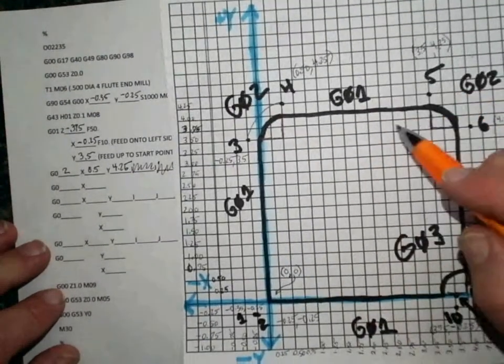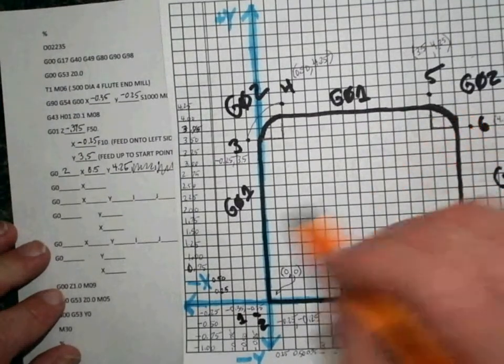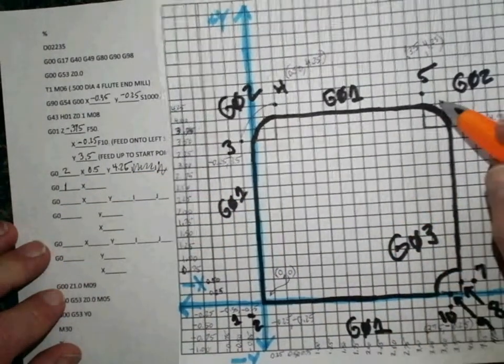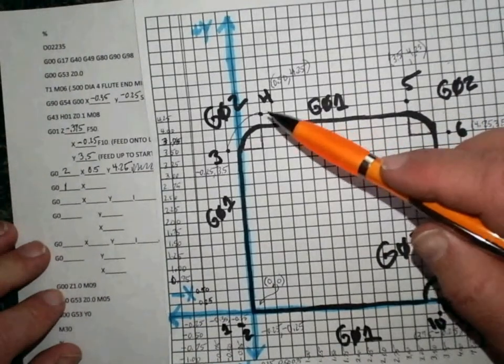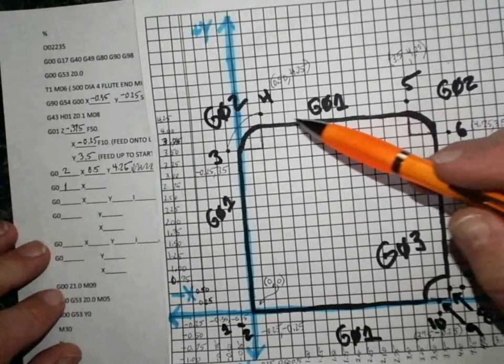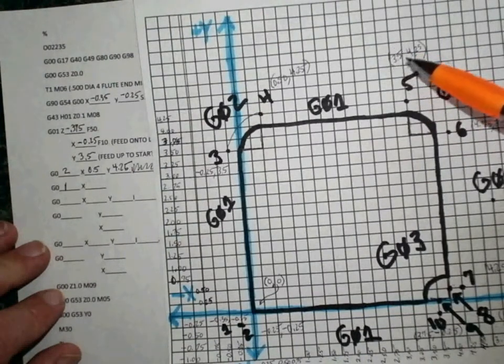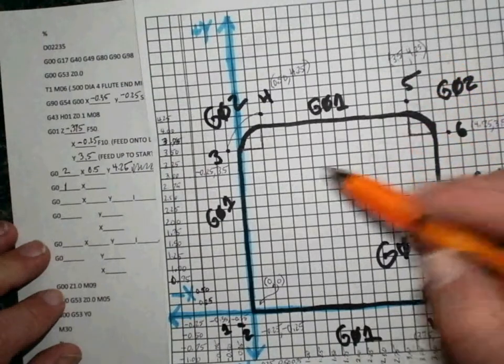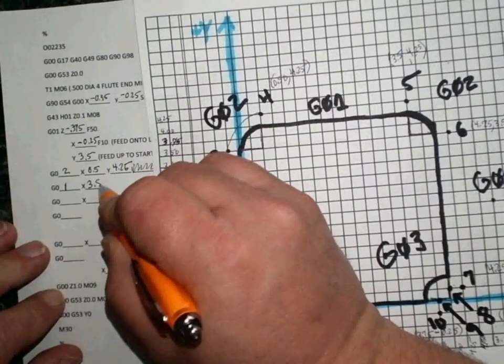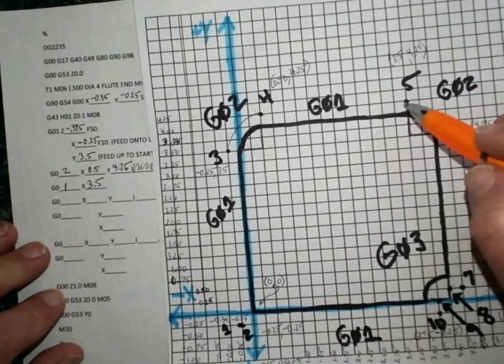The next move is simply a G01 straight line over to point number 5. So that answers this question, it needs to be a G01. And we're not making any changes in our Y coordinate, we're only moving in X. We're only moving left and right, so we're only going to be concerned with the X coordinate, which is 3.5. So we're going to move, we're going to do a G01 over to X of 3.5.